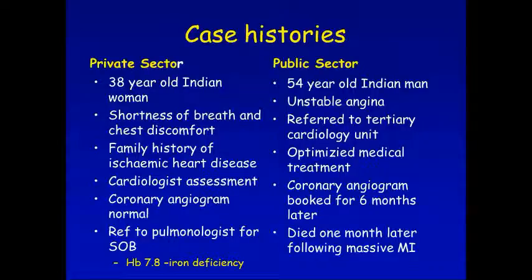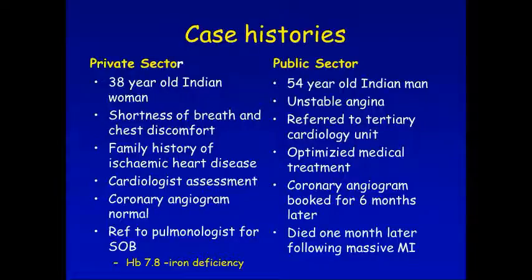I looked at her blood results and her hemoglobin was 7.8 — normal being more than 12 — and it was microcytic hypochromic. So why was she short of breath? Because she was anemic. The point I want to illustrate here is that when you present in a first world setting and we as doctors have many tools in our hands, we use them indiscriminately. The cost of treating iron deficiency anemia for six months is probably 50 to 100 euros at most. The cost of that coronary angiogram and its risk is several thousand euros. You can see how in the first world setting we can abuse healthcare resources.